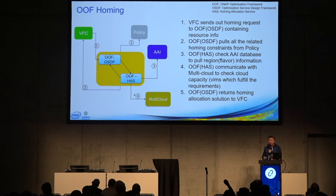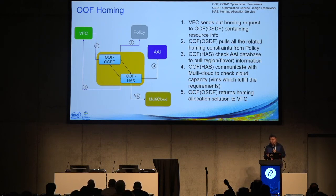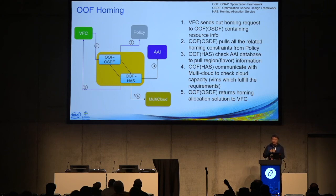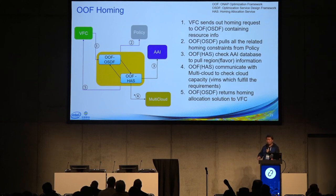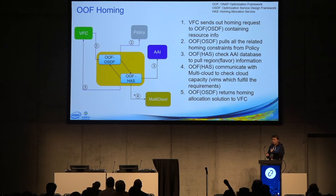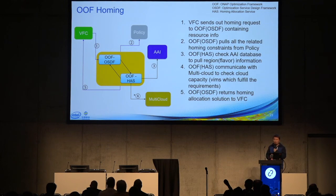OOF tells where to place the virtual machine. There are five steps: first, VFC sends the placement requirements to OOF. OOF pulls requirements from policy, which has read the Tosca requirements. OOF checks the A&AI database — which stores how many flavors in OpenStack ONAP can use — to find where SR-IOV or other capabilities are available to satisfy memory size and CPU count requirements. Then OOF checks with multi-cloud and talks with OpenStack to verify feasibility. Finally, OOF returns the placement allocation to VFC, and VFC calls multi-cloud, which calls OpenStack to launch the VNFs. If SR-IOV is specified in requirements, OOF finds the target host where SR-IOV is offered and creates the VNF there with the SR-IOV flavor.